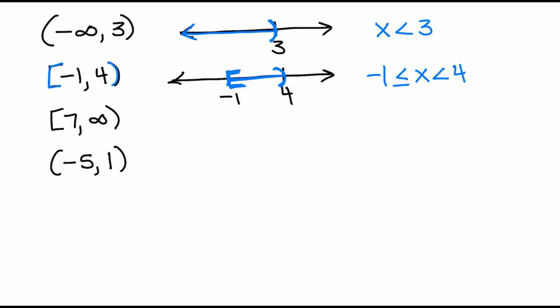The next one says from positive 7 — in brackets, so we include positive 7 — headed all the way towards positive infinity. I start at 7, place a bracket there, and shade all numbers greater than 7 toward positive infinity. Remember, infinity is not a real number so it never takes a bracket. As an inequality this would be x is greater than or equal to 7.